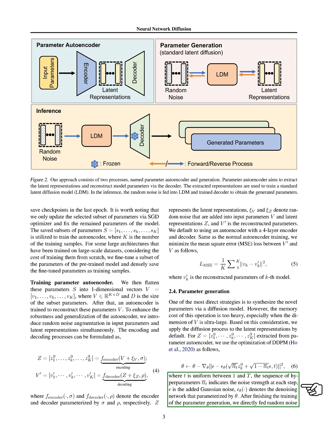Once we've trained this system, we can start with random noise and use the trained network to reverse the noise addition process, creating a new set of effective parameters. These new parameters are then combined with existing model parameters to evaluate new models.